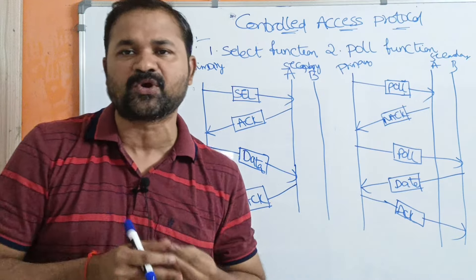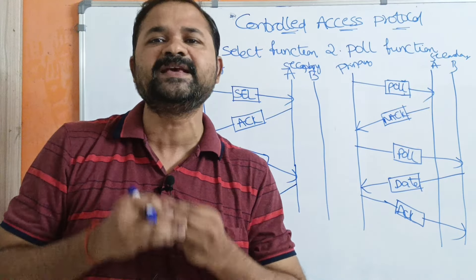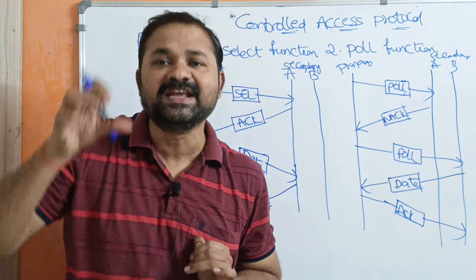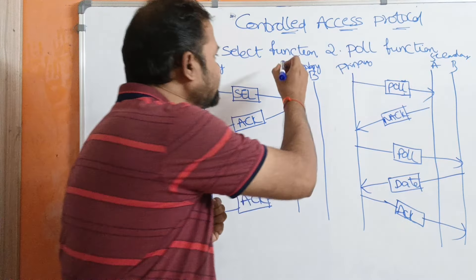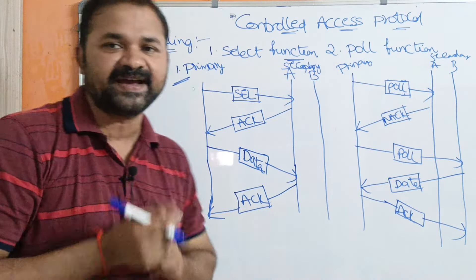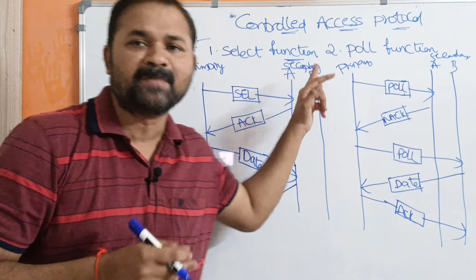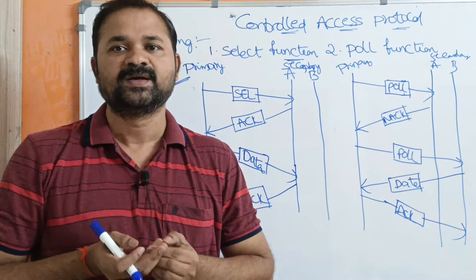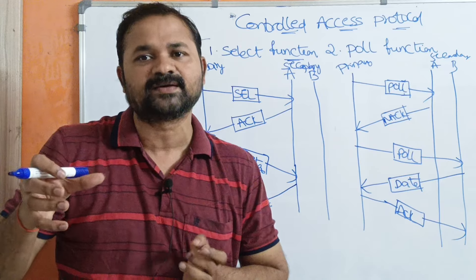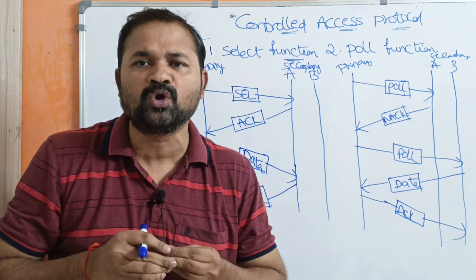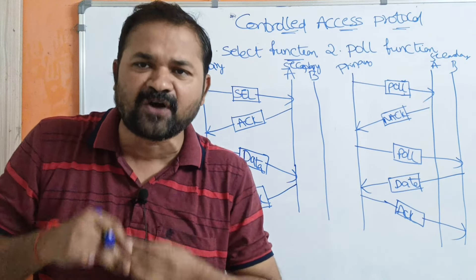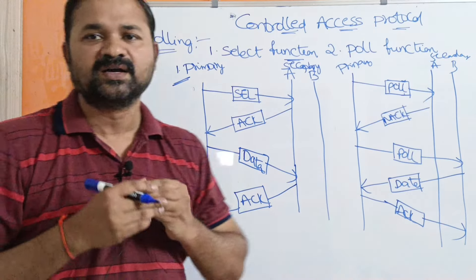In this protocol, one device will be selected as the primary device and other devices are selected as secondary devices. So we will have only one primary device and multiple secondary devices. The primary device is the initiator — it controls everything, and secondary devices simply follow the instructions of the primary device.